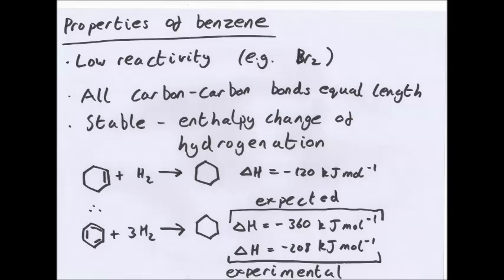All carbon-carbon bonds are the same length. It's very stable. Now we know this because if you were to have a molecule that is 6 carbons with 1 double bond plus hydrogen, that's hydrogenation, that's a simple addition reaction.